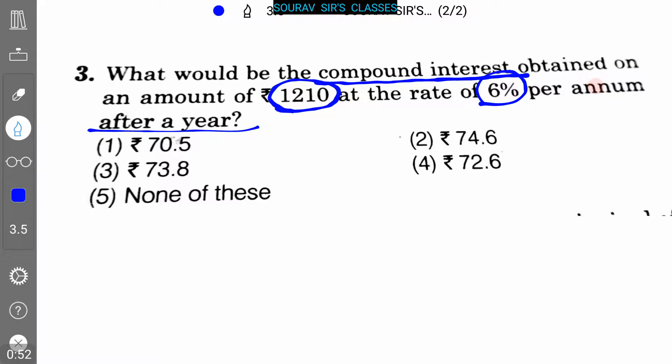As it is mentioned that the year is one, we know that the formula of simple interest and compound interest for one year is similar. That is, compound interest CI equals P times R times T divided by 100, where P is the principal amount, R is the rate of interest, and T is the time.